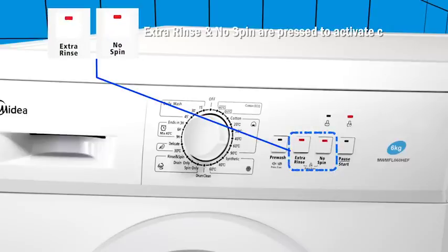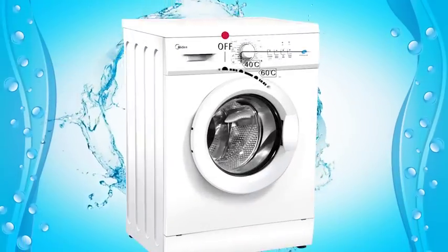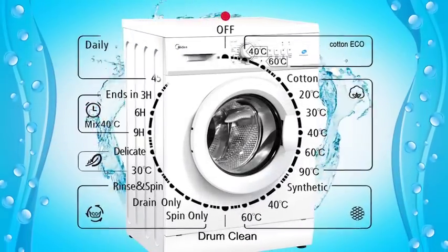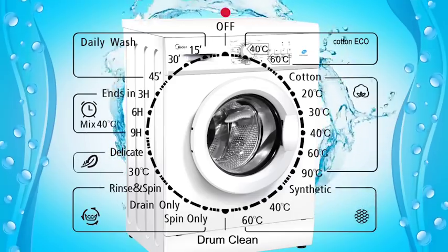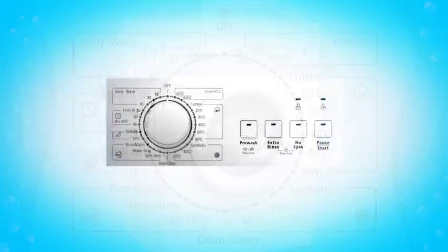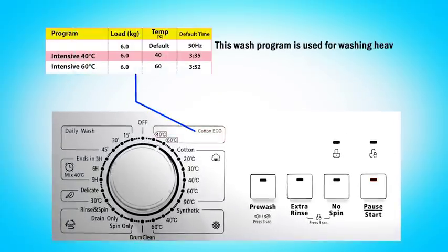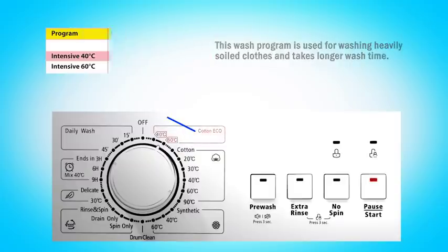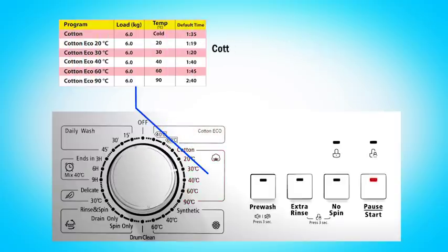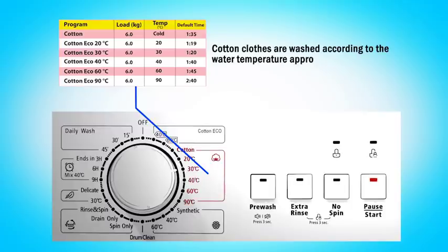Your Midea washing machine has 23 wash programs to help you get desired wash results. Intensive: this wash program is used for washing heavily soiled clothes and takes longer wash time. Cotton: cotton clothes are washed according to the water temperature appropriate for them. Synthetic: synthetic clothes like shirts, coats, or saris use lesser amount of detergent as they are made of loose strings which form more bubbles while washing.